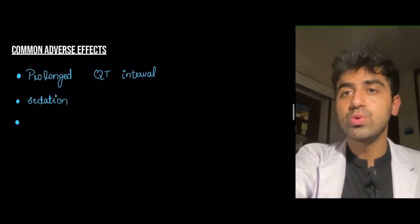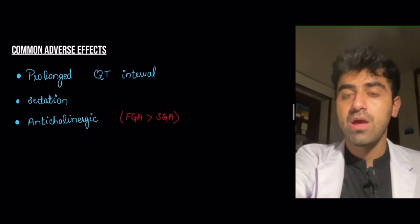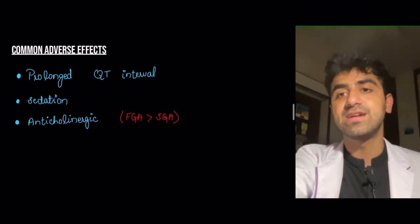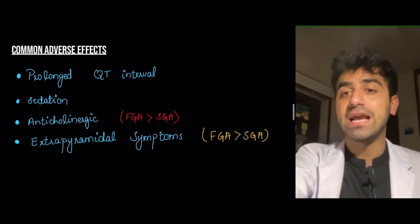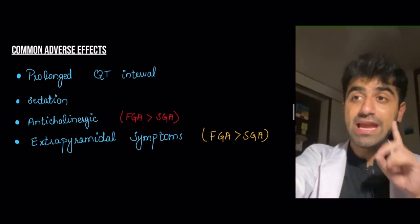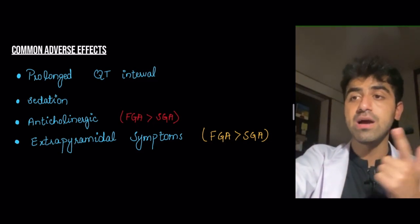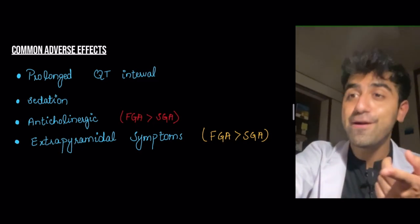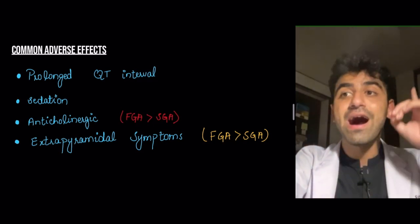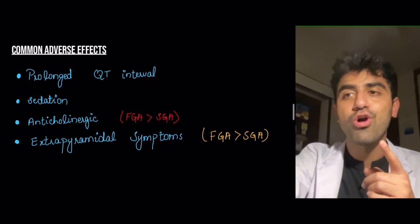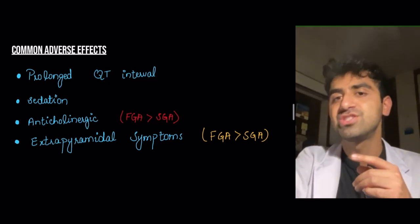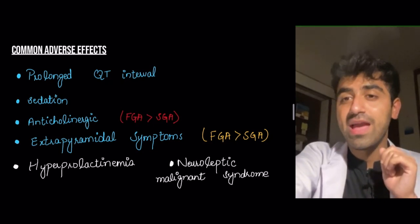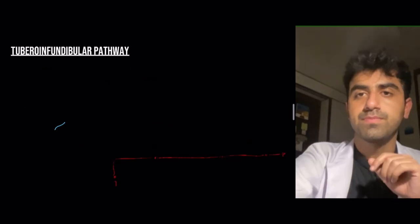Common adverse effects between first and second generation antipsychotics: both prolong the QT interval, both cause sedation, both have anticholinergic effects — more common in first generation than second generation. Both have extrapyramidal symptoms — acute dystonia, akathisia, parkinsonism, and tardive dyskinesia — but more common in first generation, and within first generation more common in high potency than low potency.